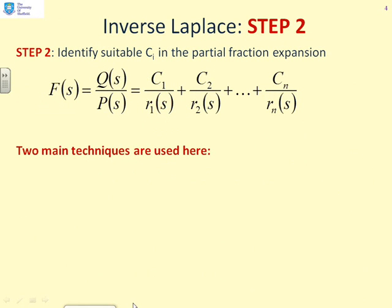So let's look at step two. What we want to do is identify suitable Ci so that we can write our original transfer function Q over P as C1 over r1 plus C2 over r2 and so on.